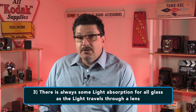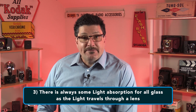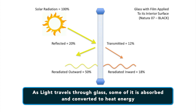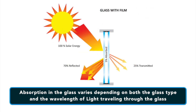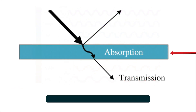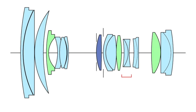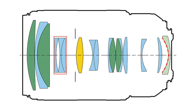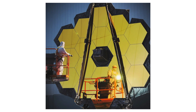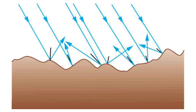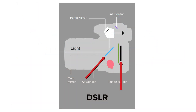Number 3: there is always some light absorption for all glass as the light travels through a lens. As light travels through glass, some of it is absorbed and converted to heat energy. Absorption varies depending upon both the glass type and the wavelength of light traveling through it, and is proportional to the thickness of the glass. Absorption losses are very small for quality optical glass — somewhere in the ballpark of 2% for an entire multi-lens optical system. A high quality mirror surface will reflect 98 to 99% of all light back to the sensor.